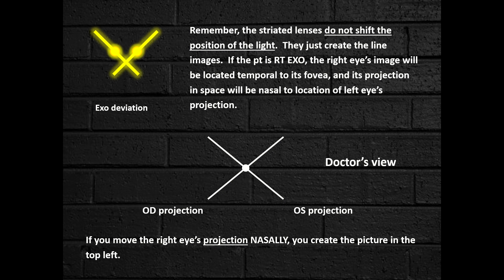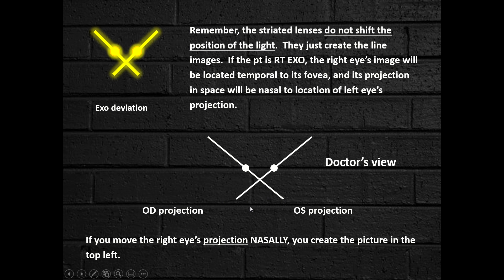For the temporal retina of the right eye, it will project that image nasally with respect to the other eye's fovea. So if this is the patient's right eye and this is the patient's left eye, if the right eye image is going to be projected nasally — the nose is in the middle — we're going to project it in that direction. When I click the slide, I'm going to move the right eye image to the left because that would be towards the patient's nose. When we do that, we get that same image seen above. So if you move the right eye's projection nasally, you create a perception that looks like the V shape, and the opposite would be true for an ESO deviation.